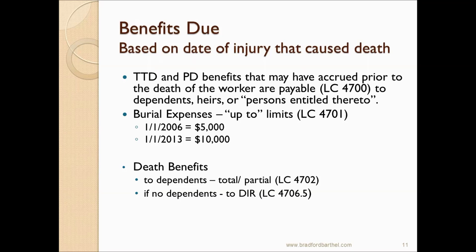Burial expenses are up-to limits, so receipts for expenses paid might be an appropriate thing to obtain. Death benefits are paid to total and partial dependents. Labor Code section 4702 talks about how those are distributed. If there are no dependents, it goes to the DIR — that's Labor Code section 4706.5 — and the amount that goes to the DIR is $250,000. So look for dependents; that $250,000 is probably better served to a dependent of that injured worker than to the DIR.